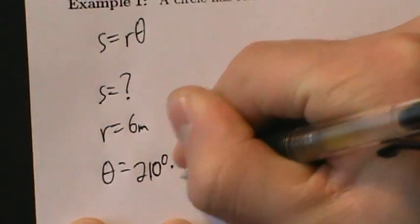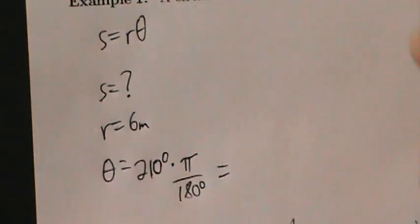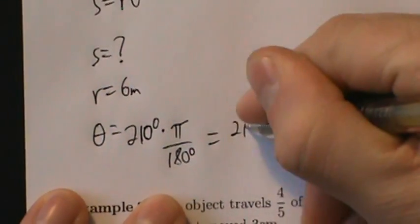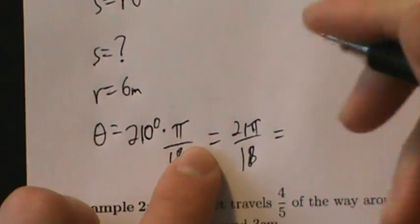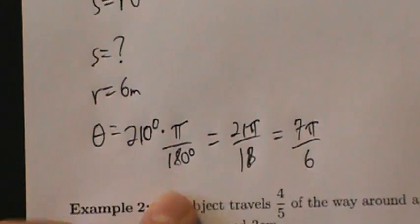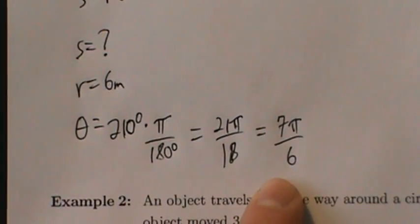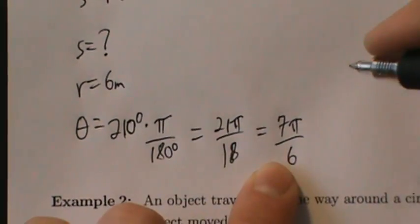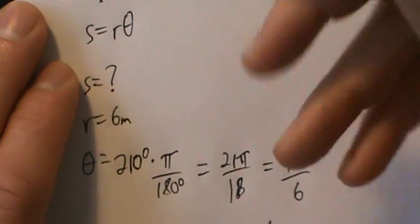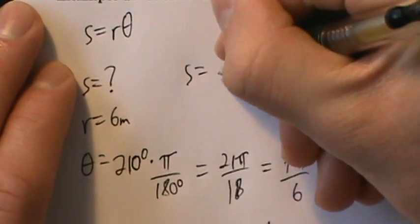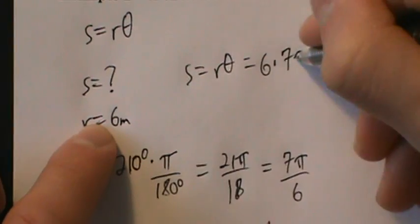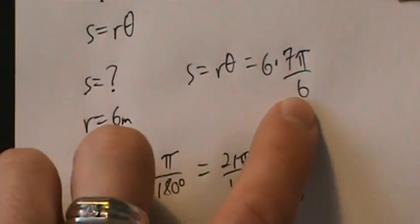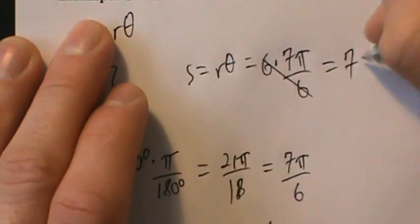All we have to do is convert to radians. We multiply by pi over 180 degrees. So that's going to simplify to 21*pi over 18, and then we can pull out a common factor of 3, giving us 7*pi over 6. So 210 degrees is 7*pi/6 radians. Now we can plug into the formula: s = r*theta = 6 times 7*pi/6. The 6 cancels, and we're left with 7*pi.